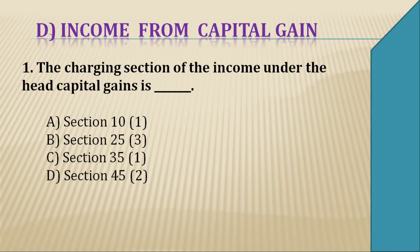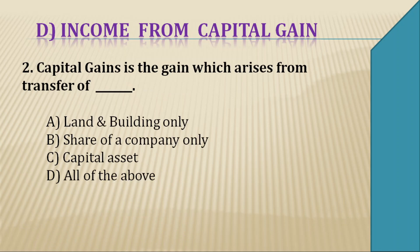Question 1: The charging section of the income under the head of capital gain is — options are section 10(1), section 25(3), section 35(1), or section 45(2). The right answer is D. The charging section of the income under the head of capital gain is under section 45(2).